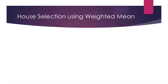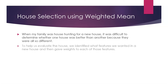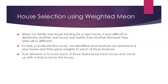House selection is an example where I've personally used weighted means. When my family was house hunting for a new house, it was difficult to determine whether one house was better than another because they're all so different. To help us evaluate the houses, we identified what features we wanted and then gave weights to each of those features. That allowed us to score each feature for each house and come up with a final score.